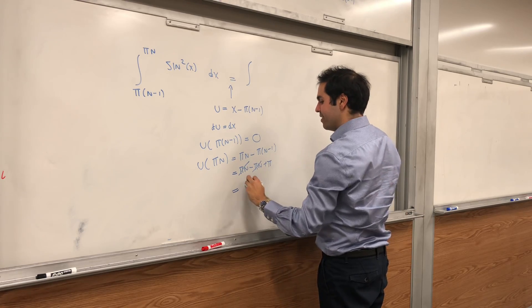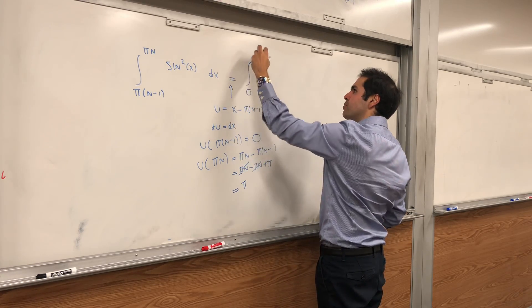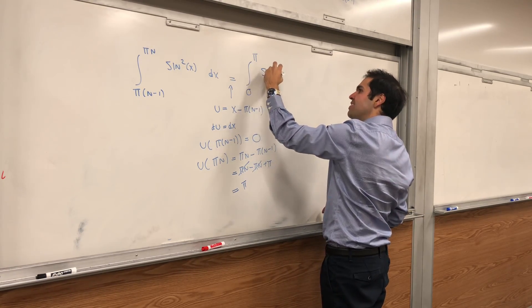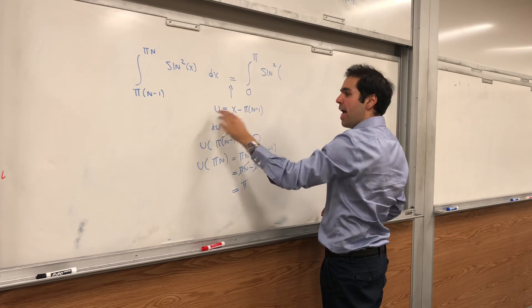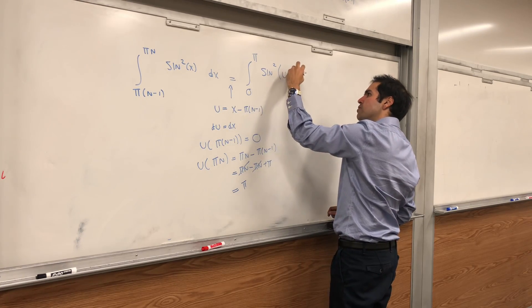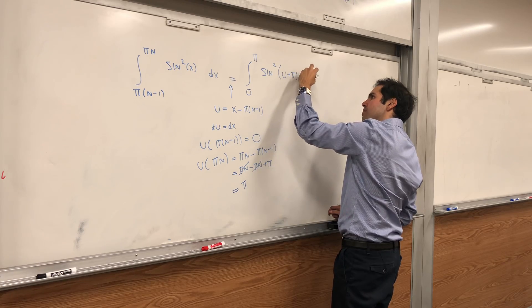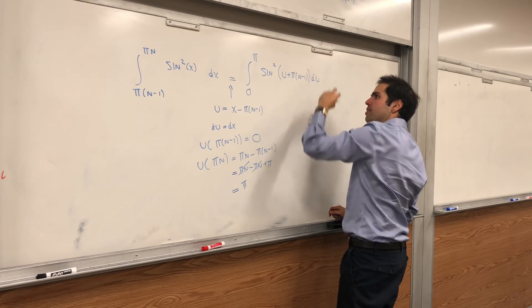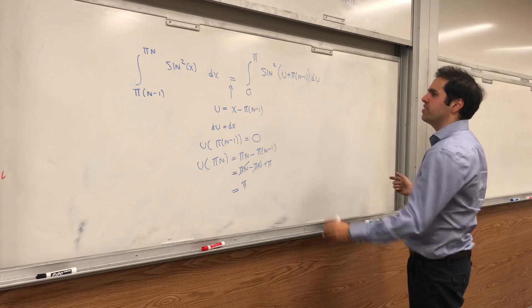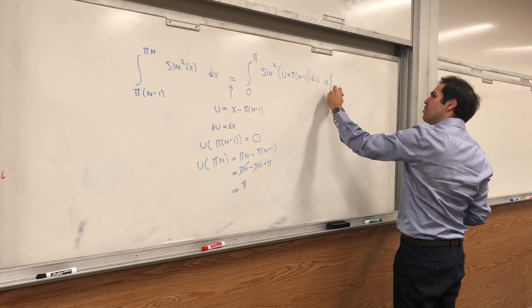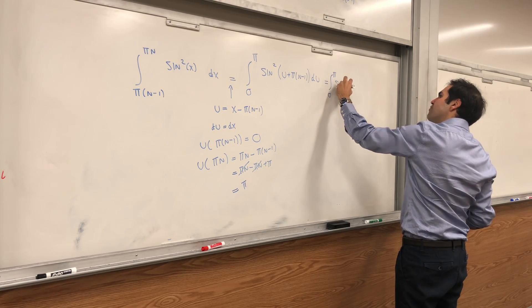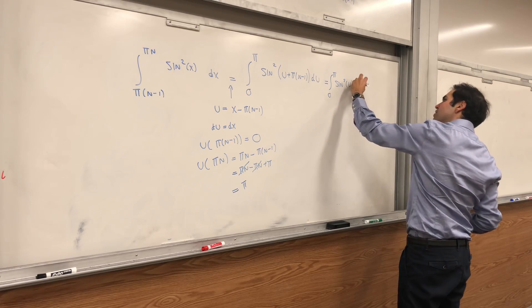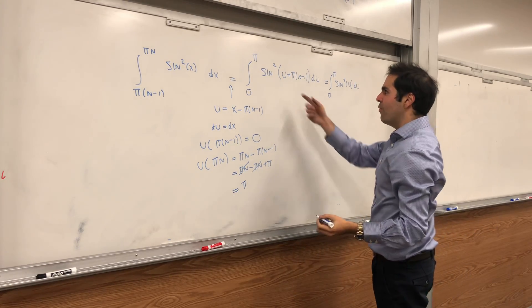We get integral from 0 to pi of sine squared of, so x is just u plus pi n minus 1, du. And I'm claiming this is just the same thing as the integral from 0 to pi of sine squared of u du.